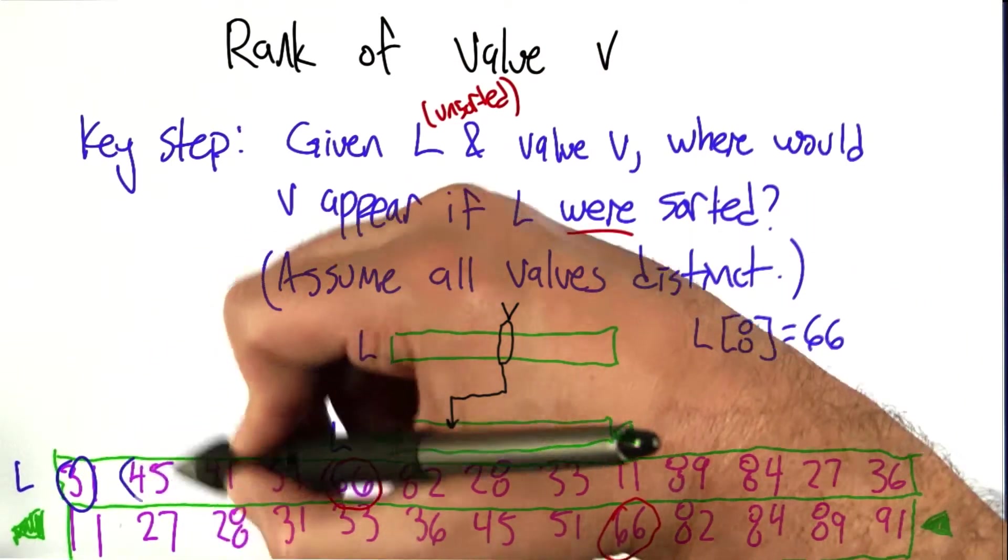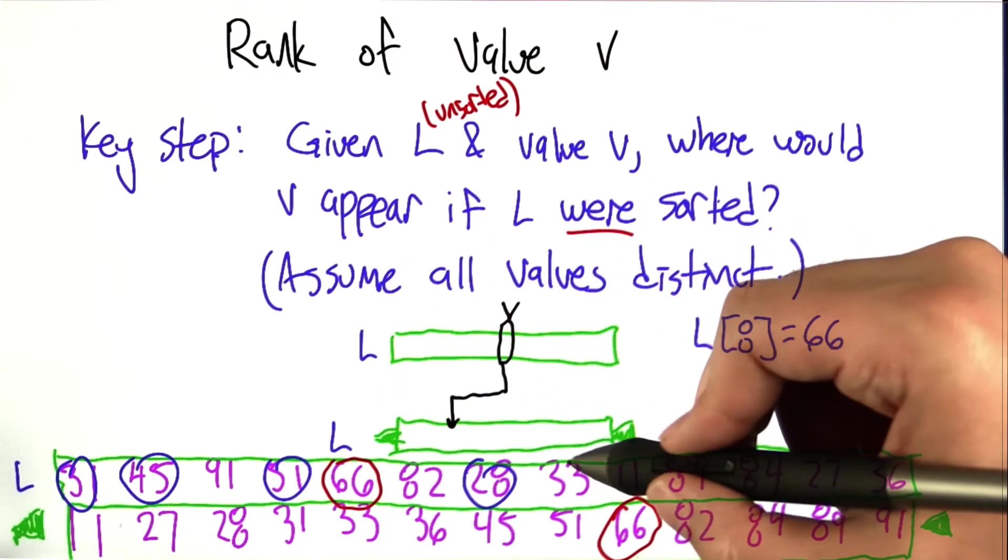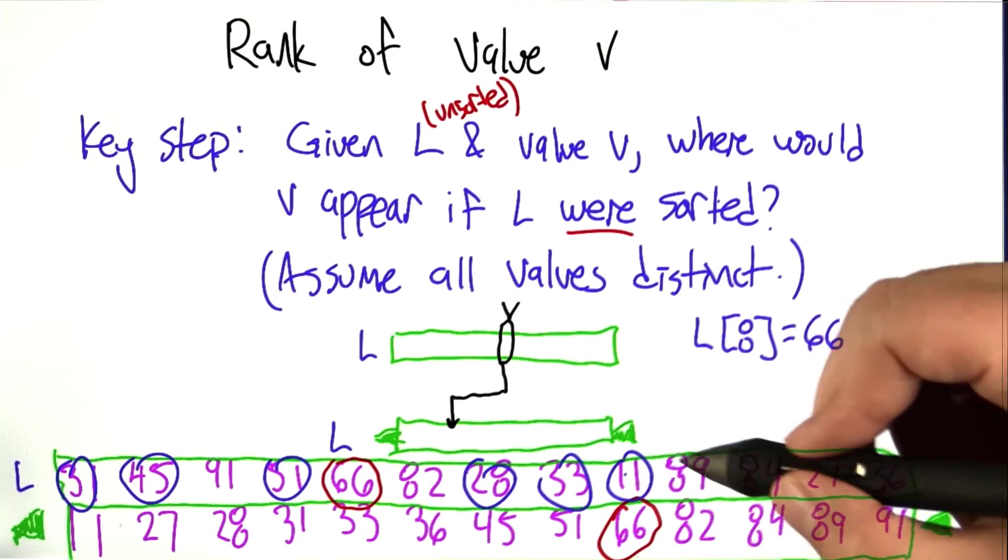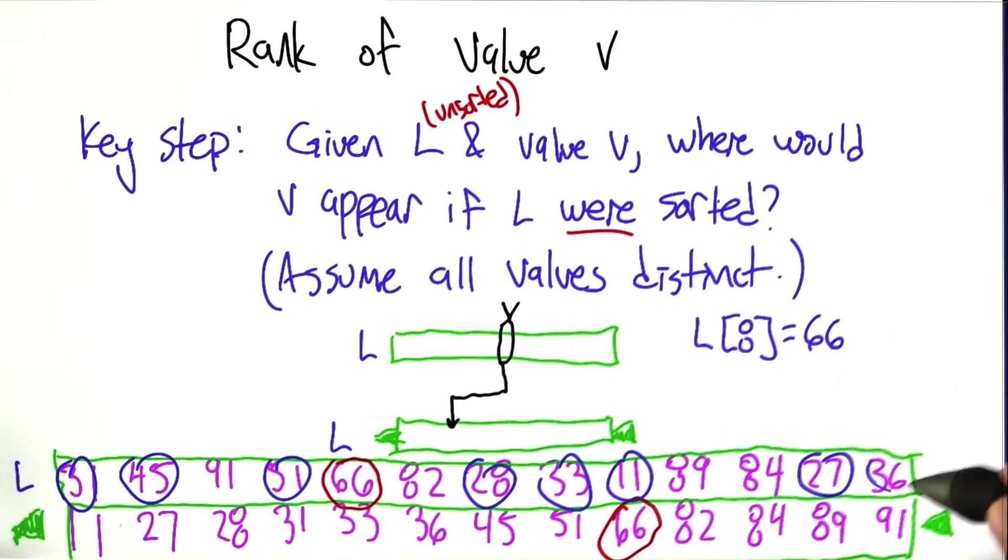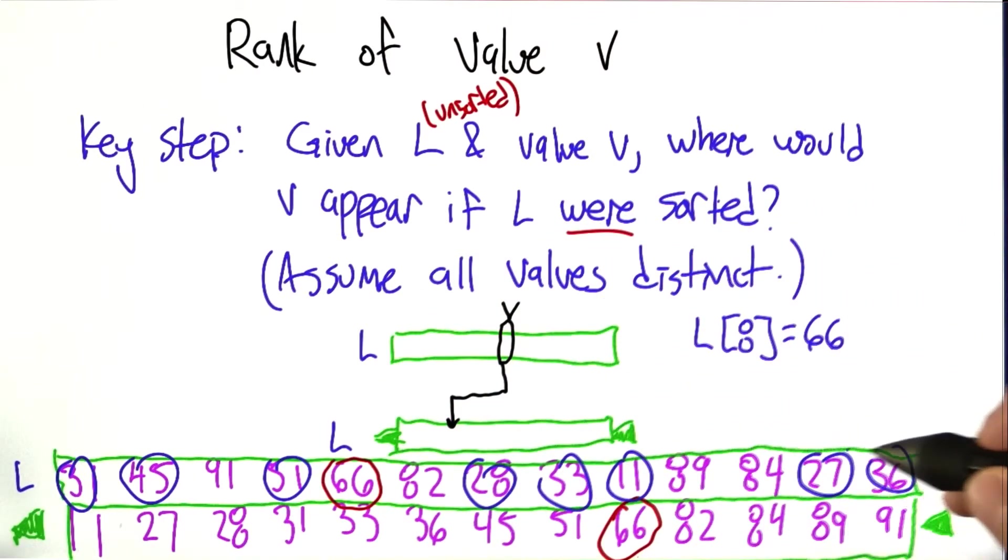31, 45, not 91, yes 51, not 82, yes 28, yes 33, yes 11, no, no, yes, yes, for a total of 1, 2, 3, 4, 5, 6, 7, 8 elements.